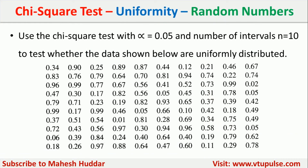These are the set of numbers given to us. There are totally 100 random numbers, all in the range of 0 to 1. We have been given two things: the alpha value, which is equivalent to 0.05, and the number of intervals, which is 10 in this case. Considering these random numbers and these two values — alpha and the number of intervals — we need to test whether these random numbers are uniformly distributed or not.